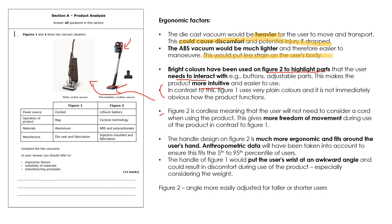Figure 2 is cordless, so the user won't need to consider a cord, giving more freedom of movement — in contrast to Figure 1 where the cord is restrictive. The handle design on Figure 2 is much more ergonomic, wrapping around the user's hand, and anthropometric data may have been used to ensure it fits the 5th to 95th percentile of users. In contrast, the handle on Figure 1 is at an awkward angle and could cause discomfort, especially given the weight. Also, the angle of Figure 2 can be more easily adjusted because the head pivots, which is good for taller or shorter users.